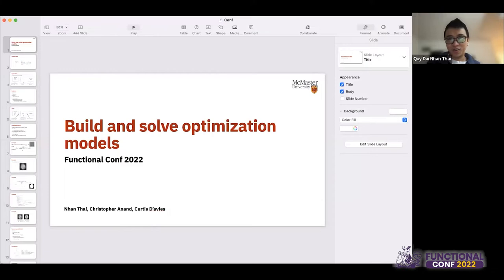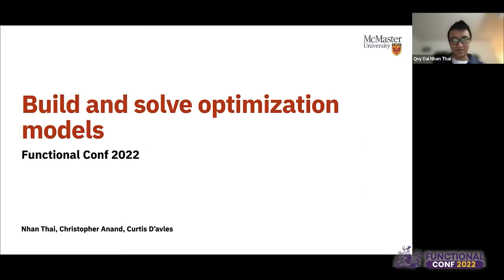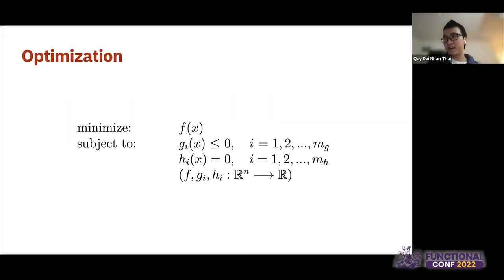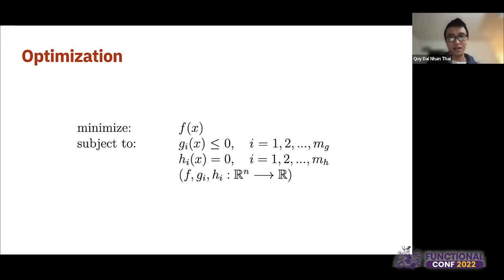Thanks again, Sando, for having us today. So today we're going to talk about building and solving optimization models with functional programming in Haskell. First, optimizations — what is it? We have some functions, and with a given constraint, we need to minimize it. It has every sort of application: resource allocation in computing, machine learning, image processing and reconstruction, etc.